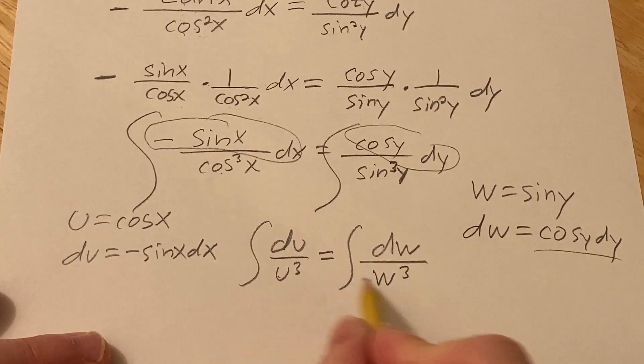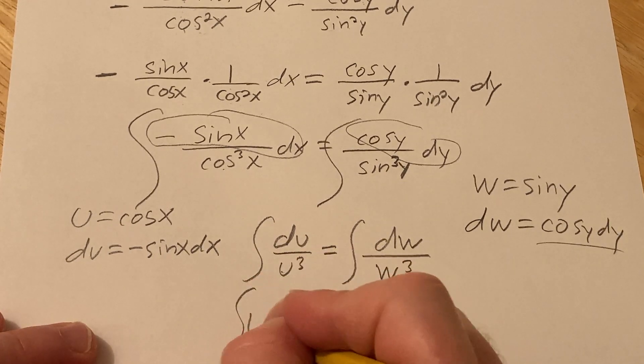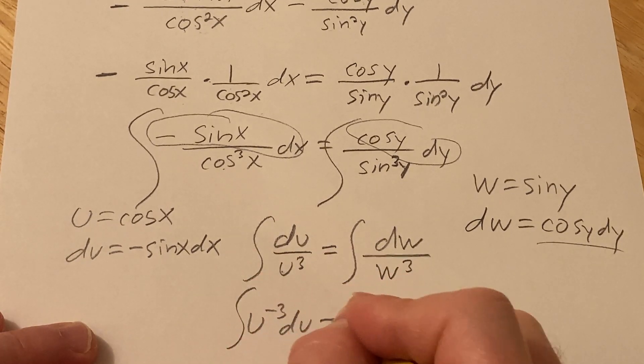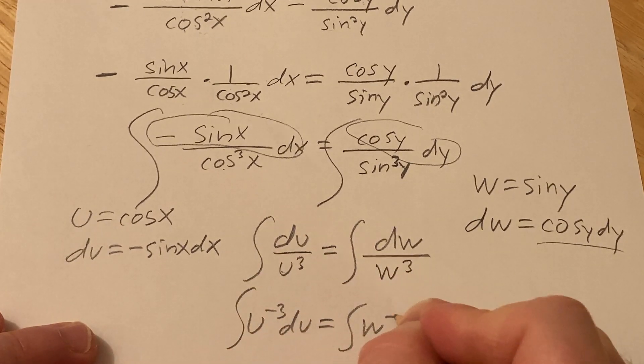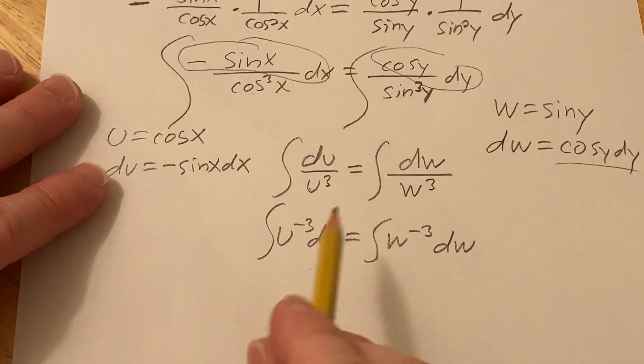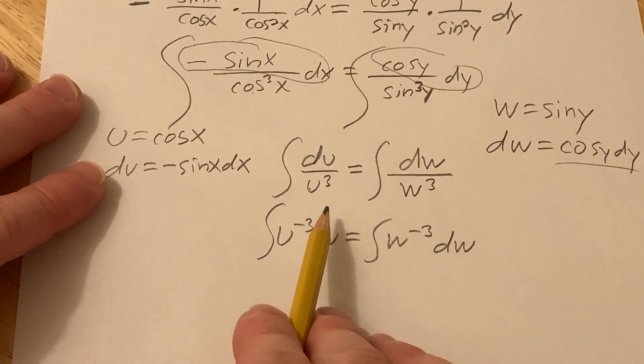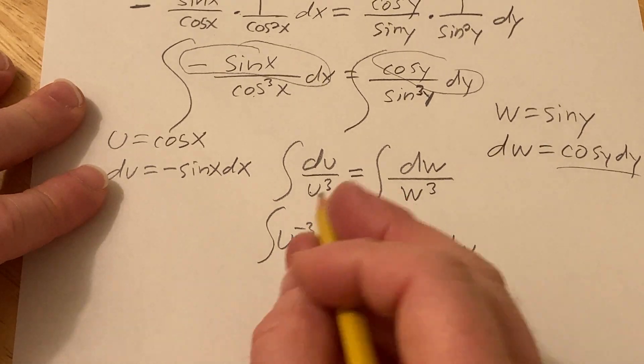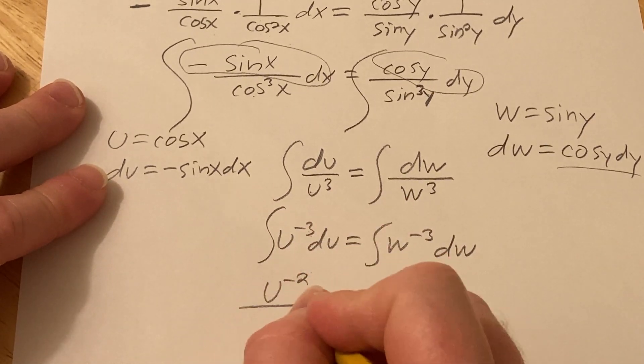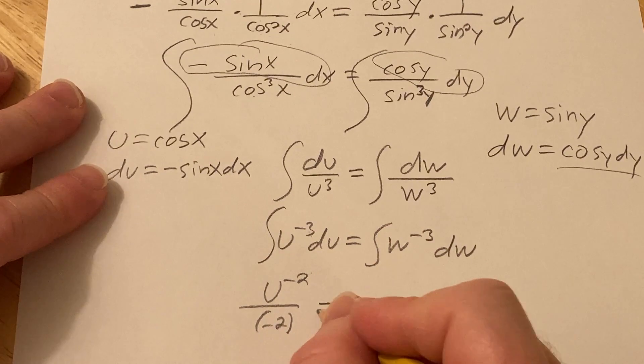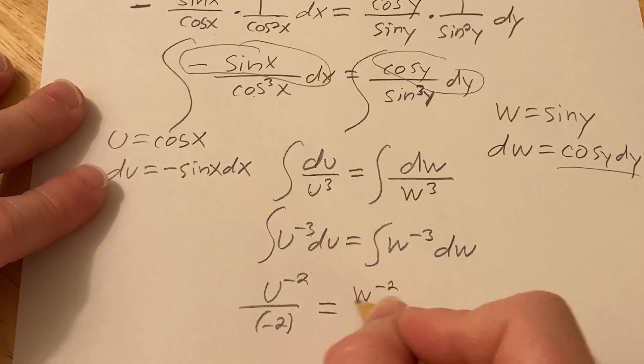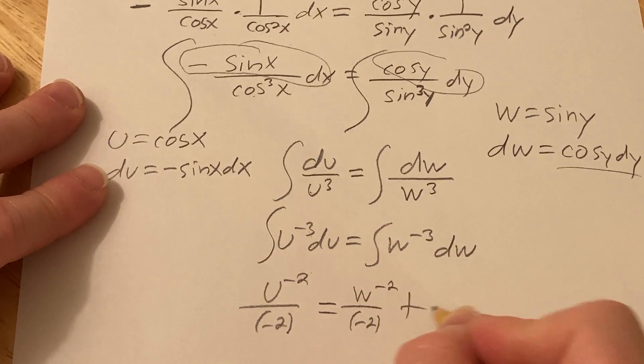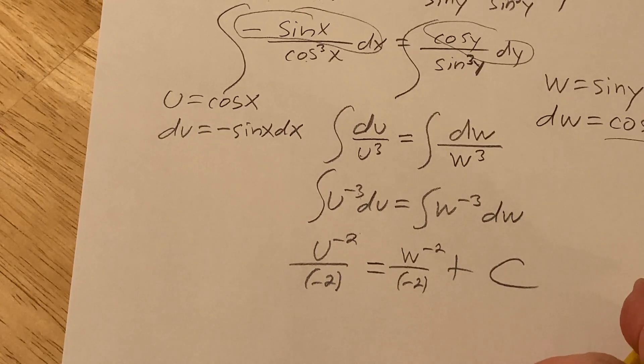We bring these upstairs now to integrate them, so this will be u to the negative 3 du, this will be w to the negative 3 dw, and when we integrate here we simply use the power rule, right? We just add 1 to each of the exponents. This will be u to the negative 2 over negative 2 equals w to the negative 2 over negative 2, and then we'll add our constant of integration capital C.